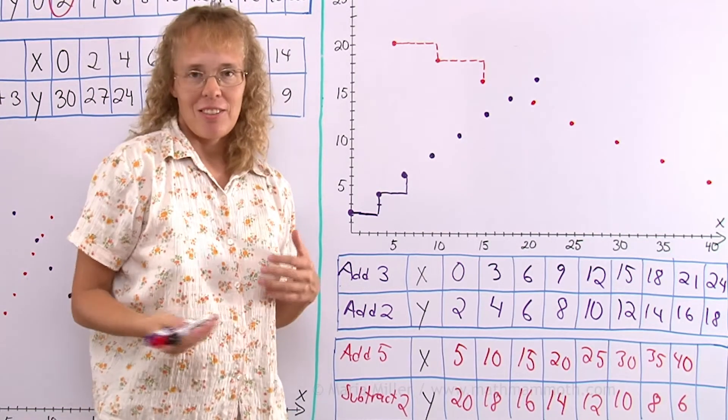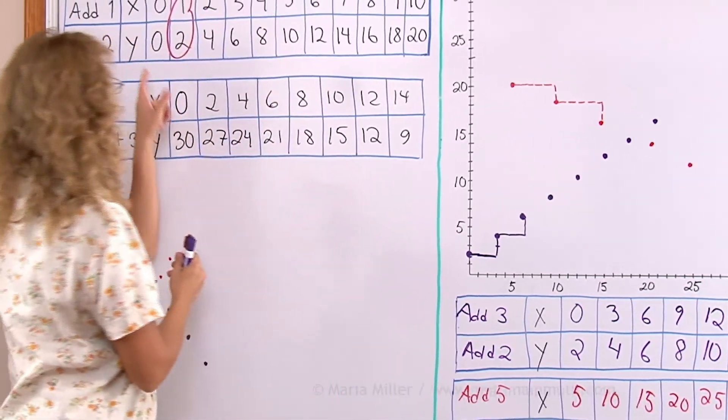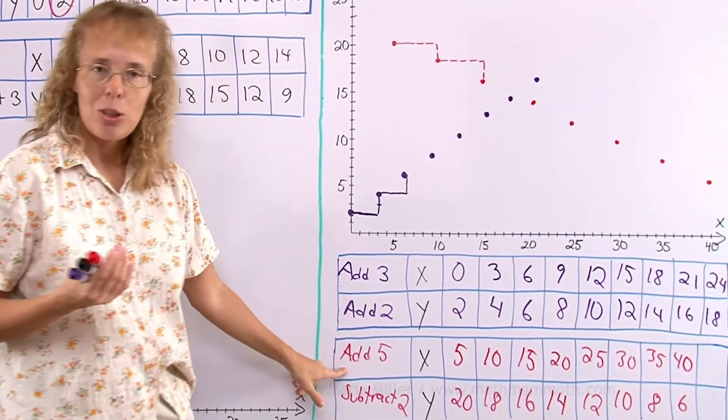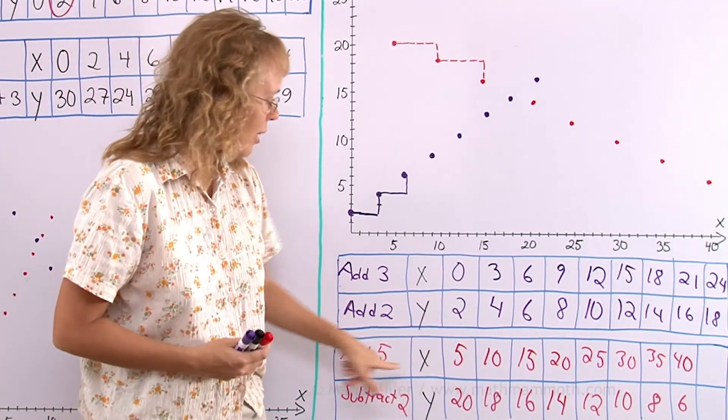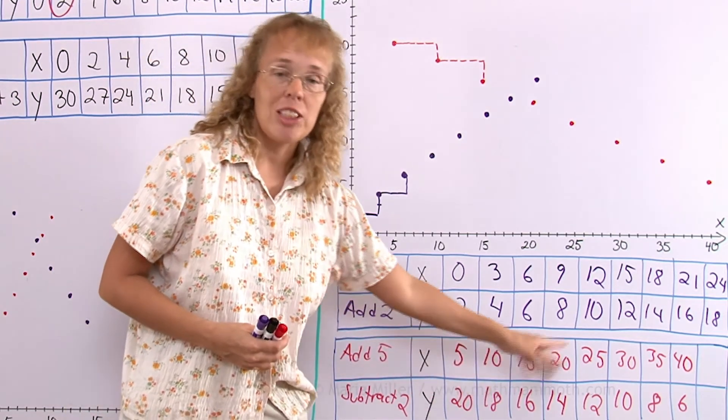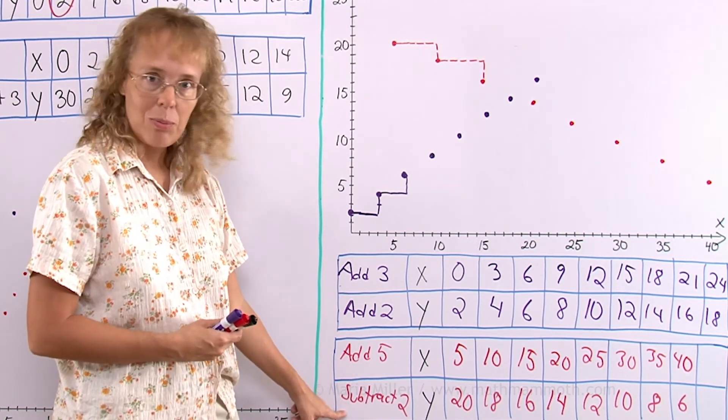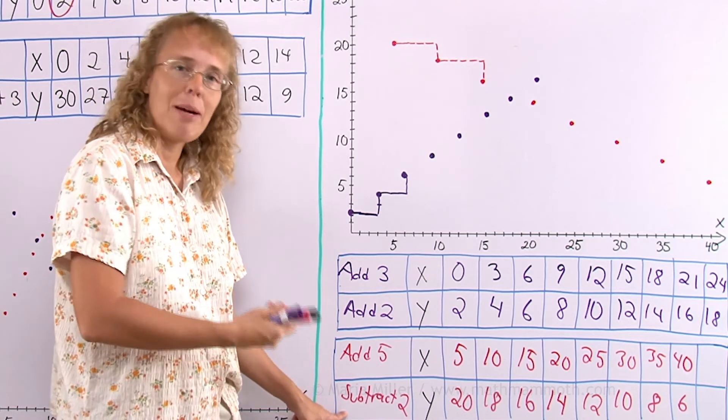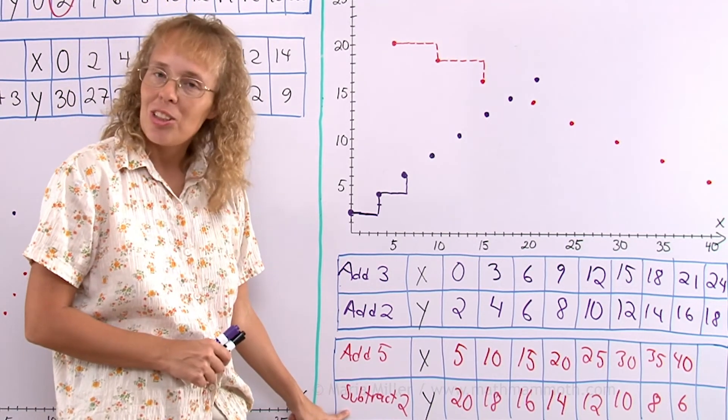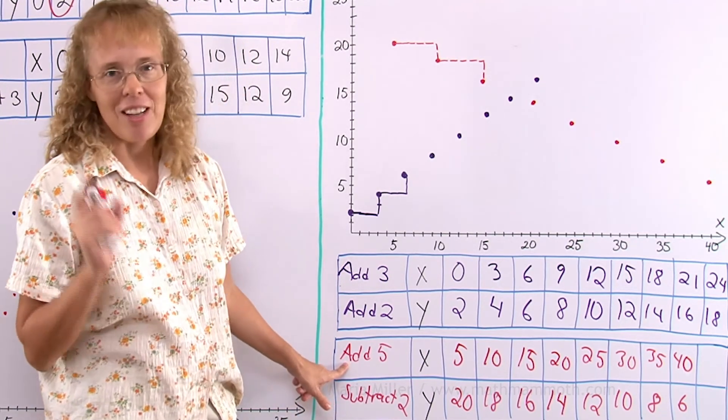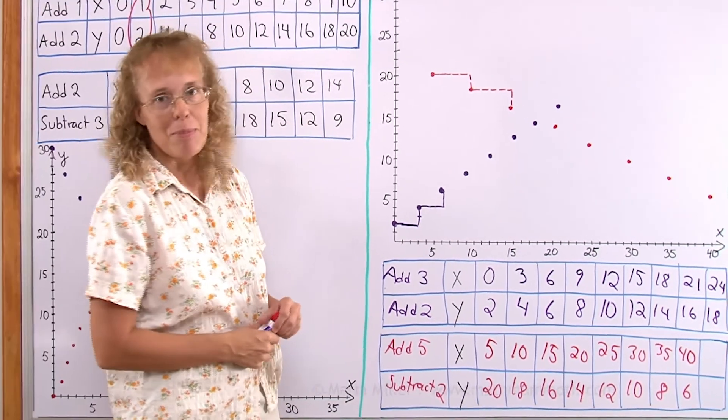Now you might continue these kind of investigations and check what if the rule for X - you know for X I always chose add something - but what if for the X you would choose subtract 3, 4, 5 whatever, starting from some big number like subtract 5 starting from 50, 45 and so on. And then check what happens if you choose subtraction here, choose either subtraction or addition here with the Y and check what happens. Another very interesting thing will be to check what if you choose multiplication here. Try with add 1 for X, it's the easiest one, and then multiply something here with the Y's and see what happens.